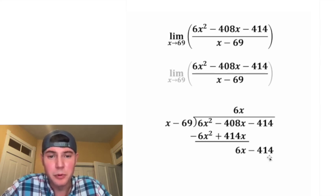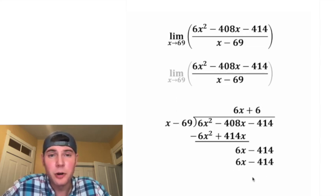And now that we're done subtracting, we can bring down the negative 414. Now we want to ask ourselves, how many times does x go into 6x? Well, that's going to be 6 times because 6 times x equals 6x. And we also want to do 6 times negative 69, which is negative 414.